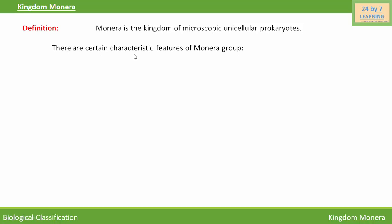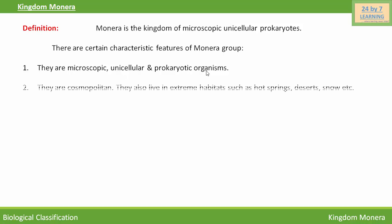There are certain characteristic features of the Monera group. They are microscopic, unicellular, and prokaryotic organisms. They are cosmopolitan, meaning they are found everywhere and in every type of habitat.